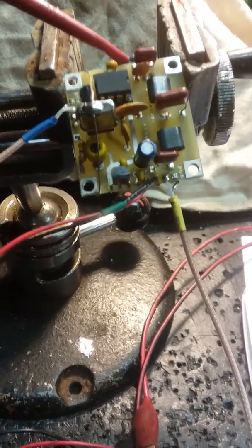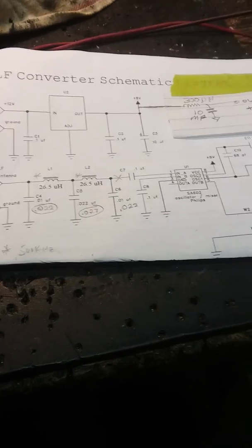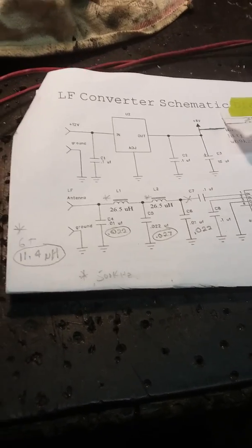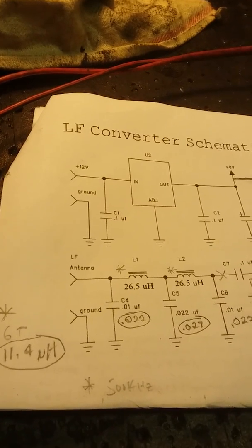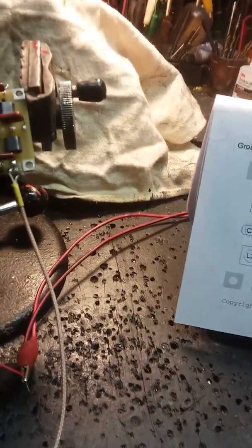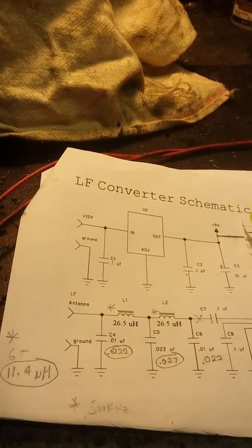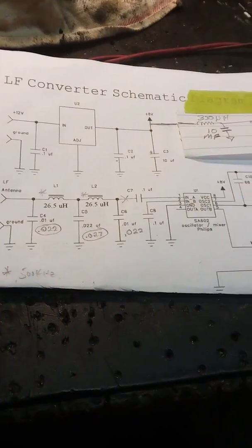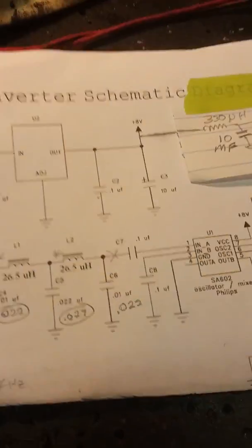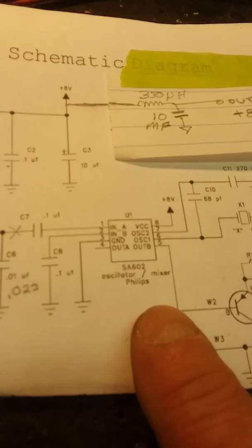Anyhow, here's the circuit. Basically this circuit is the old Charlie Olson circuit, WB9KZY. He had put these kits out, I guess he still does. But basically what it is, we're using an SA602 mixer chip.